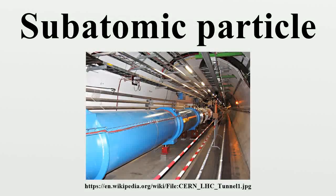In the physical sciences, subatomic particles are particles much smaller than atoms. There are two types of subatomic particles: elementary particles, which according to current theories are not made of other particles, and composite particles. Particle physics and nuclear physics study these particles and how they interact.